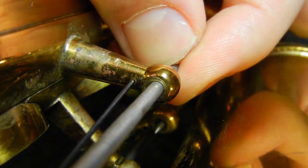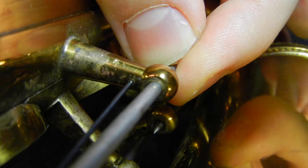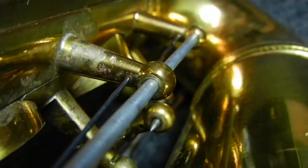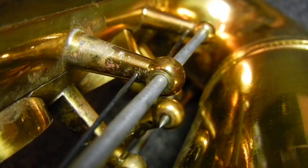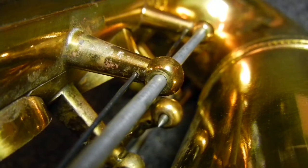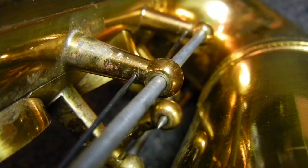And you should be able to see that the rod doesn't move inside the post, which is exactly what you want, because if you've got movement of the rod inside the post, then no matter how tight your keys are around the rod in between the post, they're still going to move.